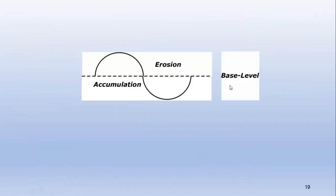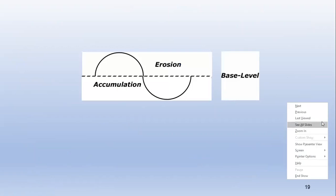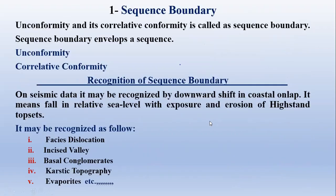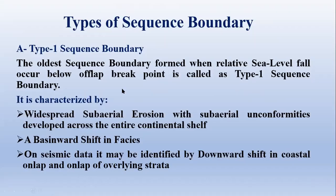There are two types of sequence boundary. Type 1 sequence boundary is the oldest sequence boundary, formed when the relative sea level fall occurs below the off-lap breakpoint. It is characterized by widespread sub-aerial erosion with sub-aerial unconformities developed across the entire continental shelf, a basinward shift in facies meaning that progradation occurs, and on seismic data it may be identified by the downward shift in coastal on-lap and on-lap of overlying strata.